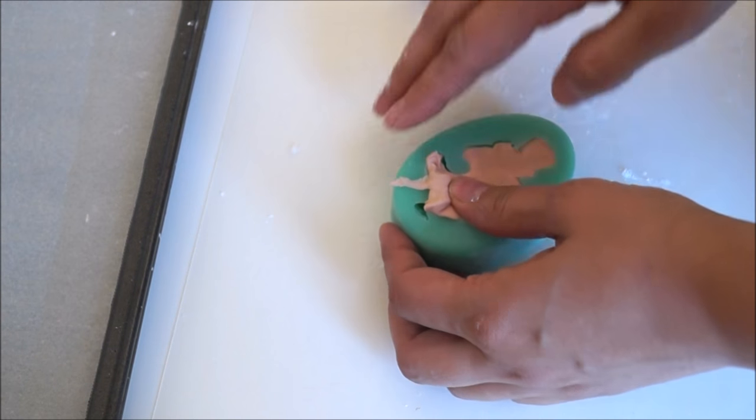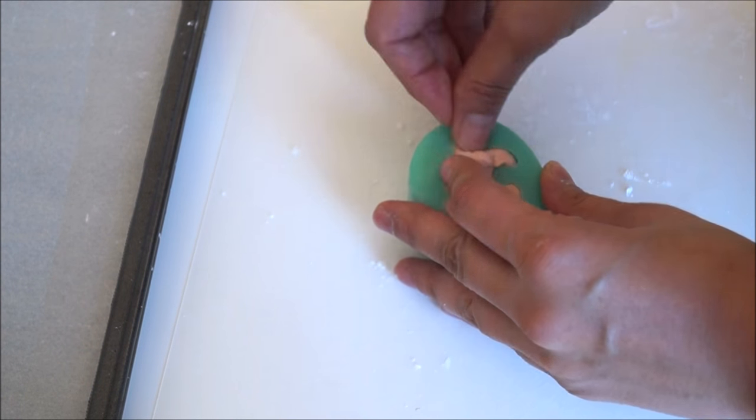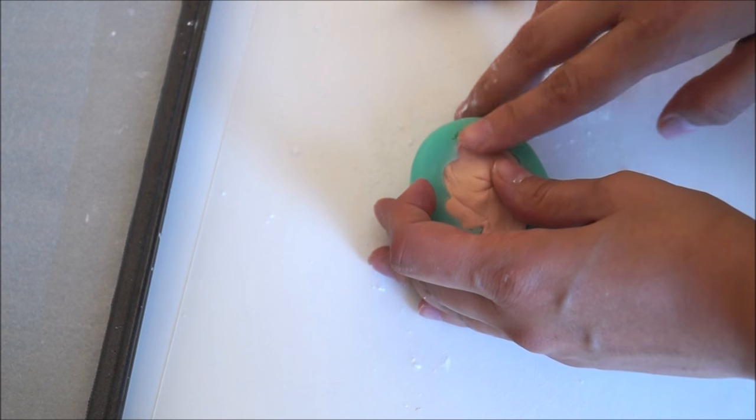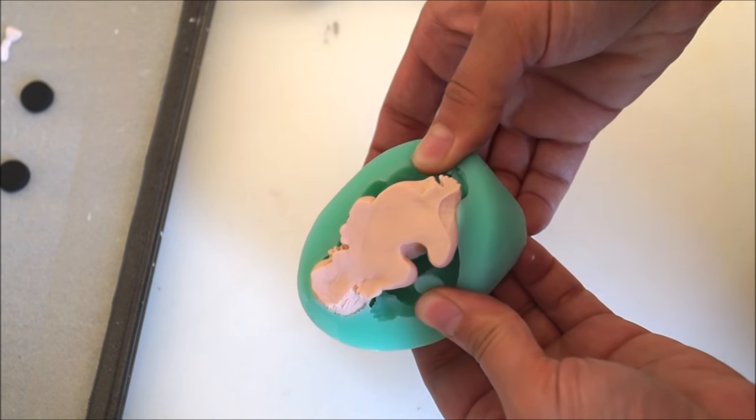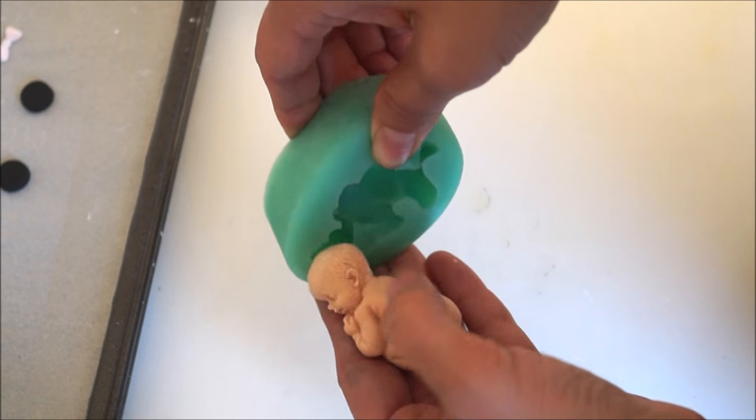Then simply pop it in the freezer for about 15 minutes. Gently pull away the fondant from the mold and carefully take your piece out.